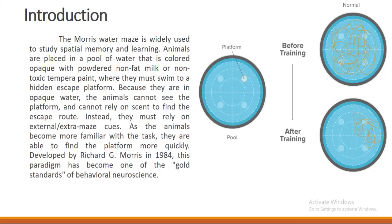The Morris Water Maze experiment is one of the most widely used experiments for studying spatial memory and learning procedures in animals. Animals are placed in a pool of water that is colored with non-fat milk or non-toxic tempera paint to make the water opaque. Due to the opaqueness of the water, animals lose their visibility.